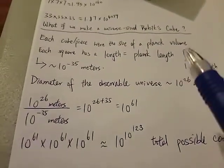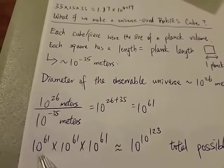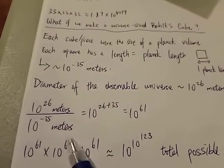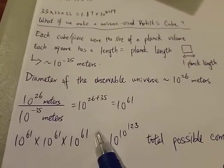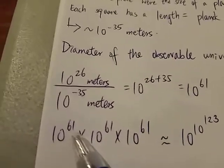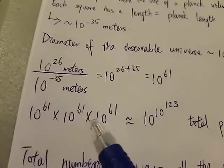In other words, this huge Rubik's cube, this universe sized Rubik's cube, will be a 10 to the 61 by 10 to the 61 by 10 to the 61, which is huge. This is one followed by 61 zeros. And you cannot get any more than that.